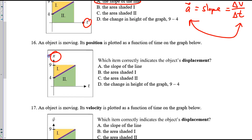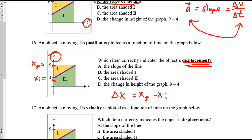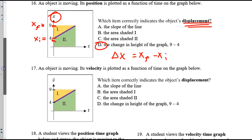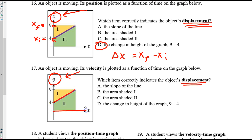For 16, we're looking at a position graph — displacement. The person starts at a position of positive 4, that's what the Y axis tells us, and they end at a position of positive 9 meters. So the displacement is simply final minus initial — choice D. Number 17 is very different, because it's velocity on the Y axis. Displacement is gotten very differently — we trace over the line and shade the area between the line and the X axis. That area is the displacement on a velocity graph.